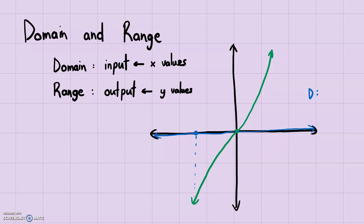For example, take a point on the x axis — the graph reaches it. Take another point further along — with an arrow indicating the graph continues, it will eventually reach that point too. The same reasoning applies on the positive side. So this graph reaches all x values, meaning the domain is all real numbers. For the range, looking at y values, the graph seems to reach all y levels — positive and negative — so the range is also all real numbers.